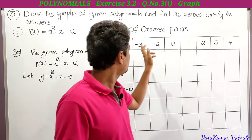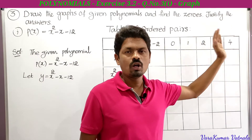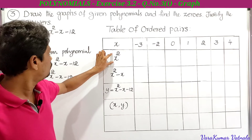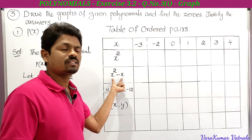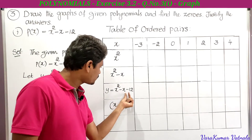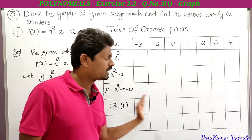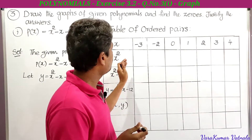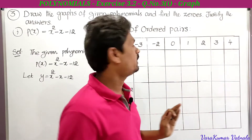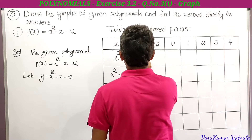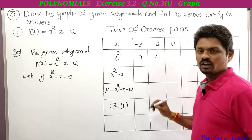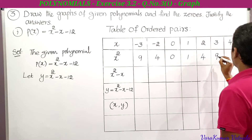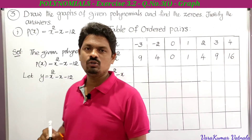The x values I have taken are: -3, -2, 0, 1, 2, 3, 4. From the equation y = x² - x - 12, we need x², x² - x, and x² - x - 12. To find x² values, we square all the x values: (-3)² = 9, (-2)² = 4, 0² = 0, 1² = 1, 2² = 4, 3² = 9, 4² = 16. These are the x² values.